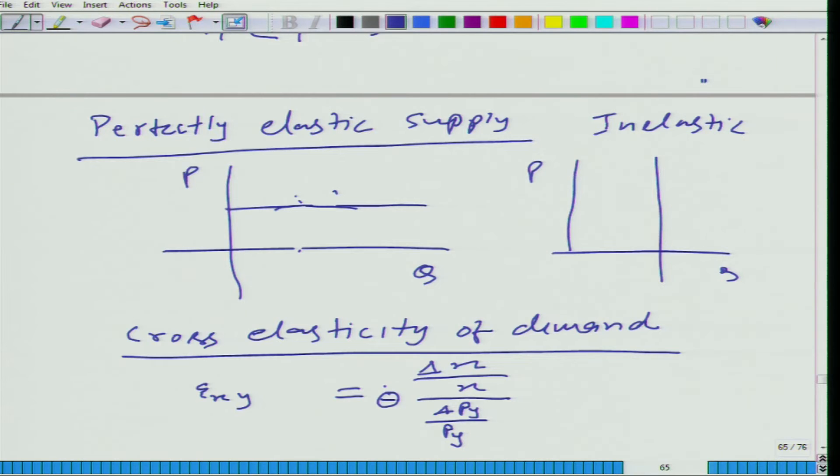Here we will not put minus sign or anything. It can be positive, it can be negative. It is possible that price of one good goes up and its response on the other good is that the quantity demanded of other good comes down. When does it happen?